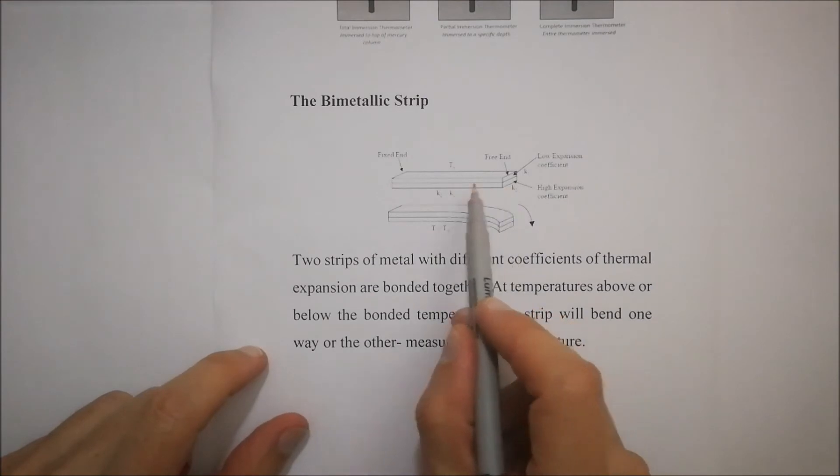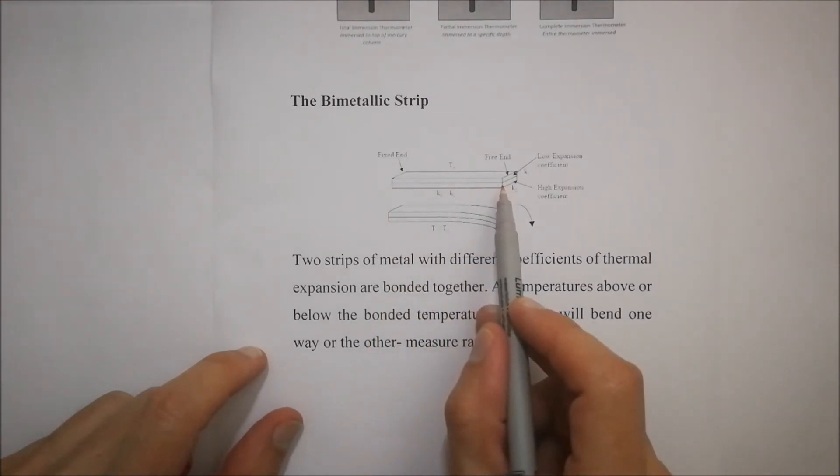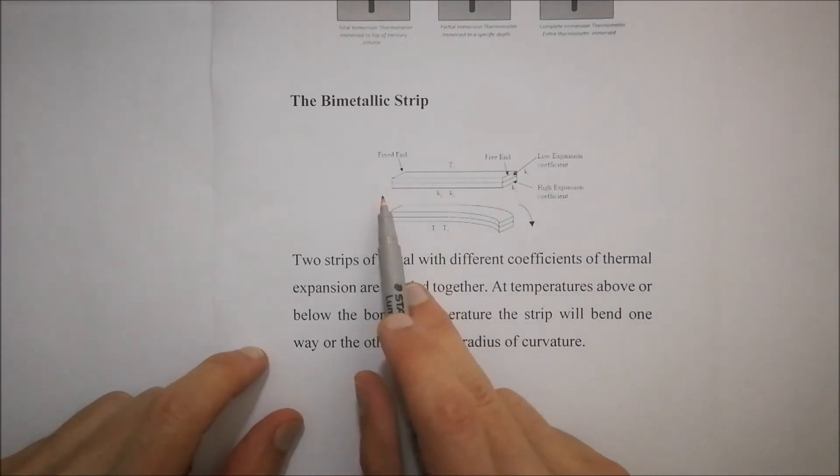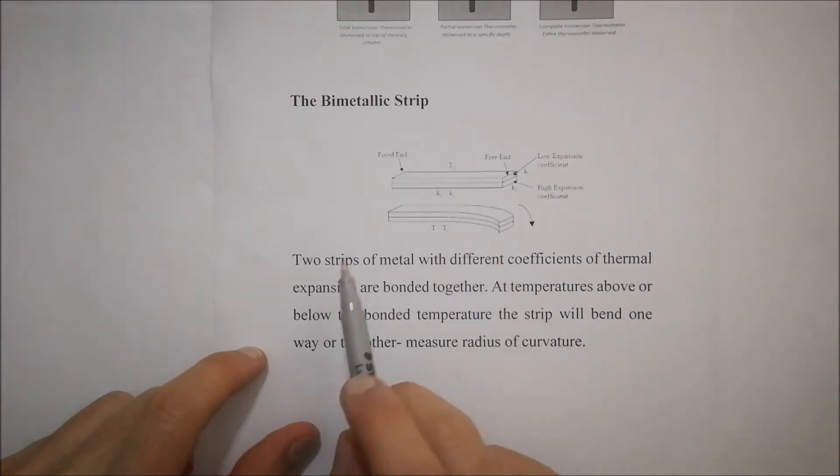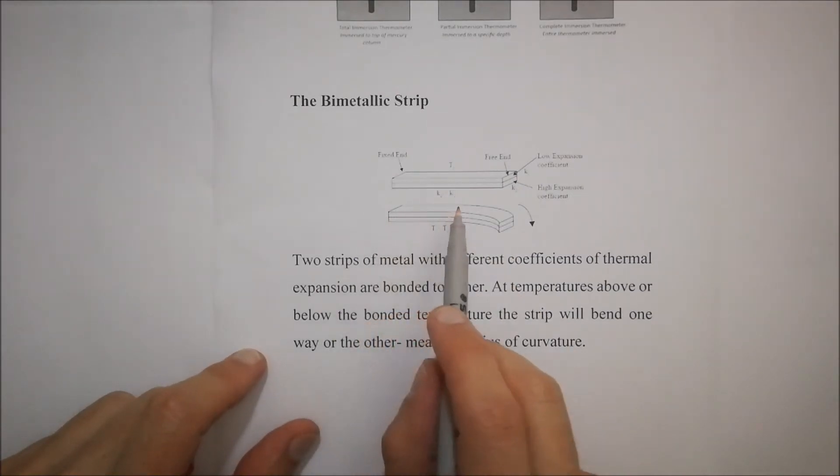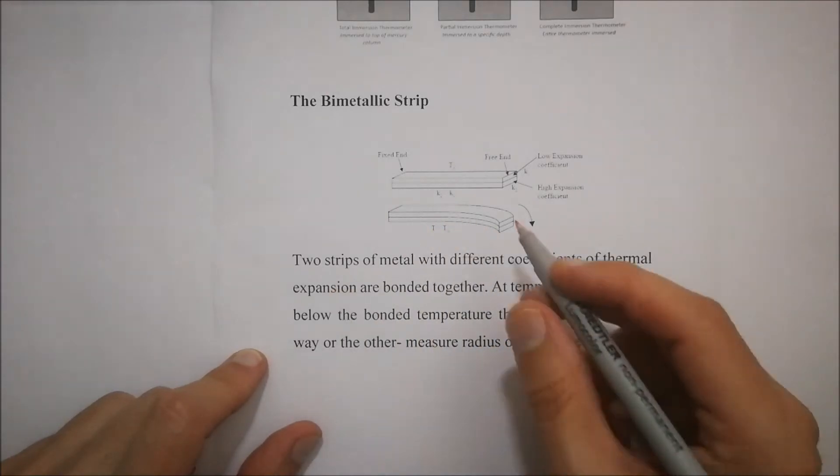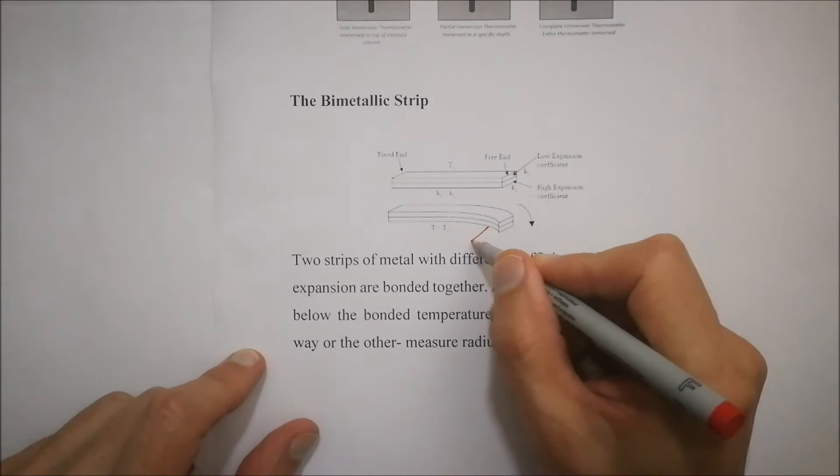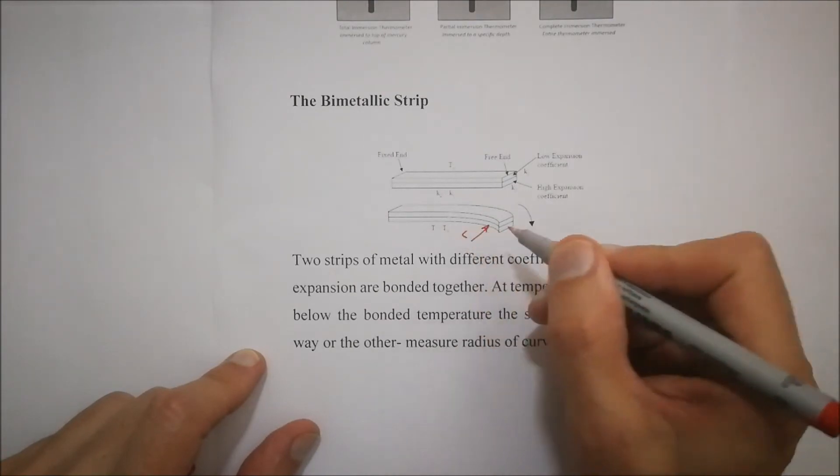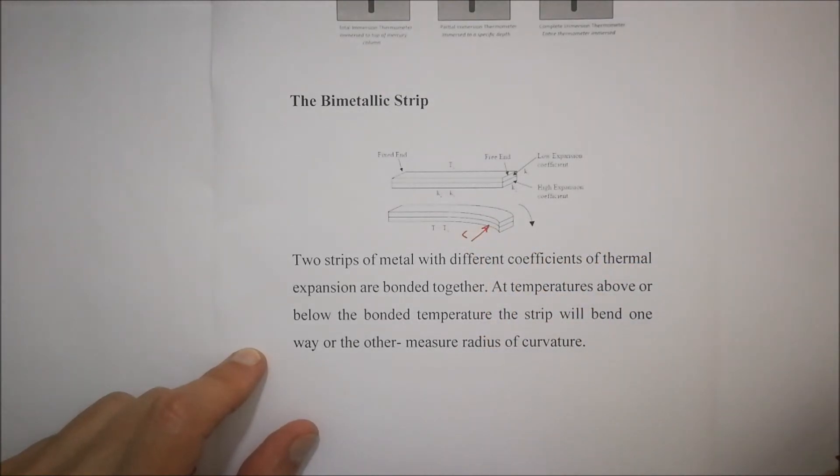What you do is you would bond these two metals together, and that would be at a specific temperature T0, and so it will appear flat. But as the temperature increases, the one metal will tend to start bending, and that would cause a circular shape forming with the two metals. So essentially what you do is you measure what this radius is, and depending on what that radius is, you'll be able to then determine what the temperature is.